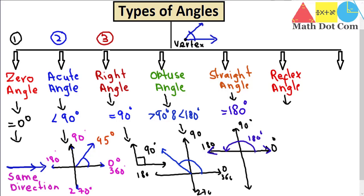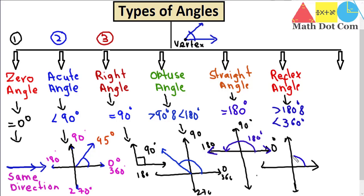The next type is the reflex angle. The measurement of a reflex angle is greater than 180 degrees and less than 360 degrees. On the coordinate system — with 0° and 360° at the same position, 90°, 180°, and 270° marked — any angle greater than 180 and less than 360 is a reflex angle.